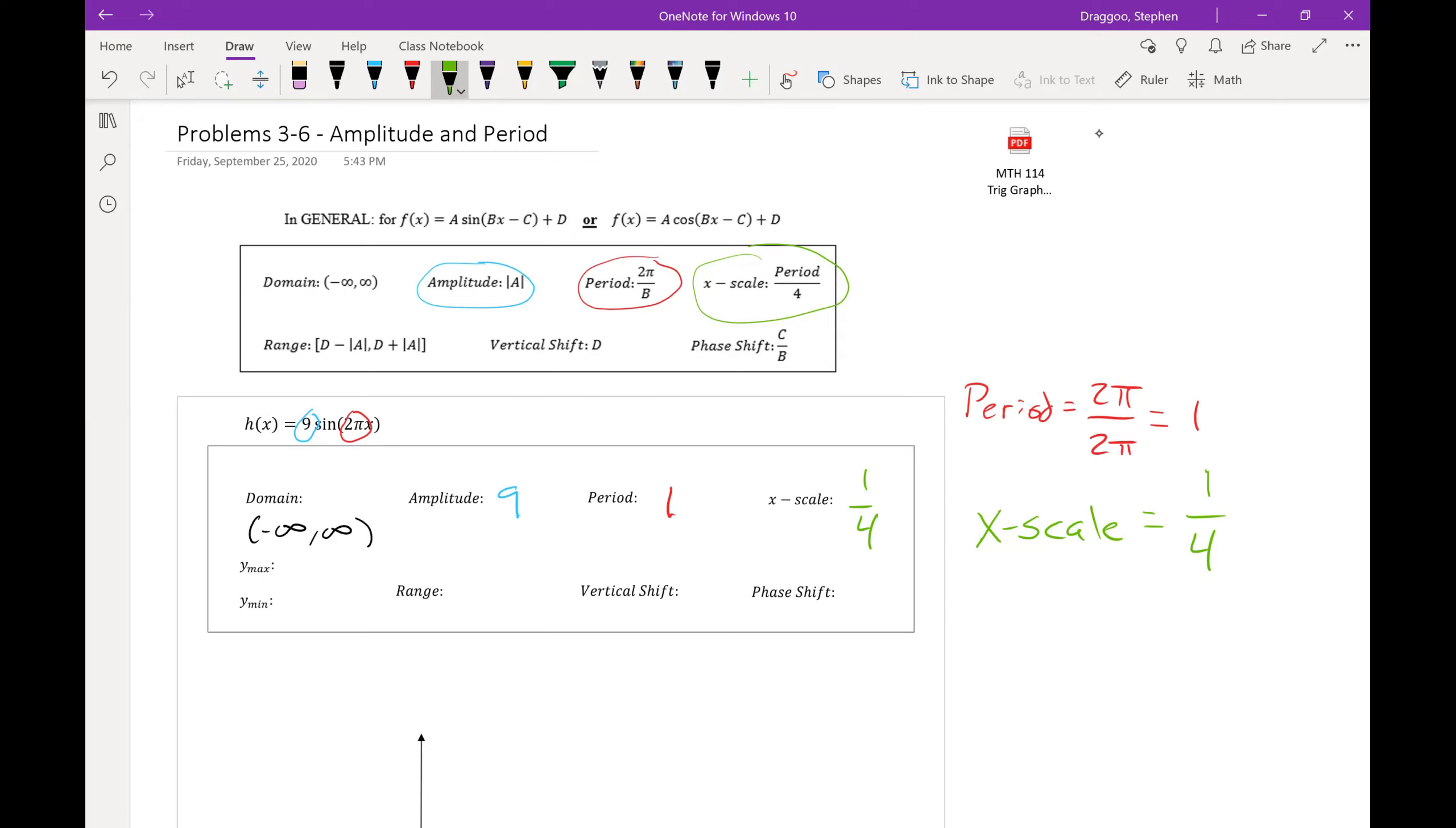Now to get our y minimum and our y maximum, for right now, all we really need is the amplitude. Minimum value is going to be negative 9, and the maximum value will be positive 9. Since we check the range, we don't have d yet. So we aren't going to worry about that just yet. Our range will just be negative a to positive a. And we aren't considering vertical shift or the phase shift just yet. So in this case, they're both 0.